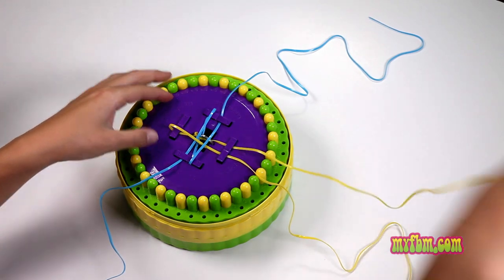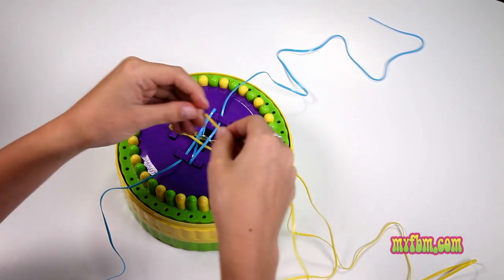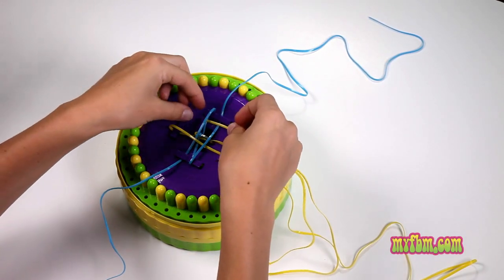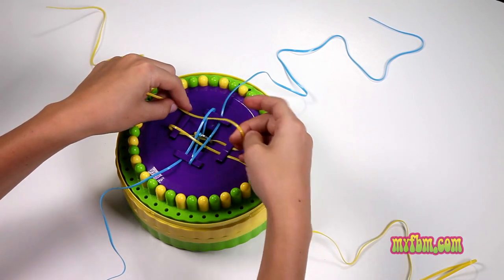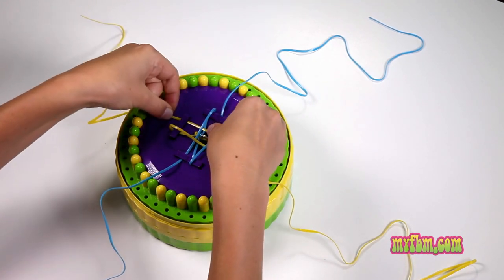Take your number three and go over the number two and under the number one and place it under the eight holder.